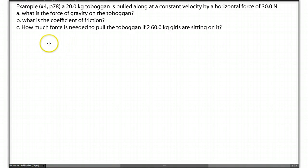Let's look at the example. The question is on page 78, number 4. A 20 kg toboggan is pulled along at a constant velocity—it should be velocity, it's speed on the original question—by a horizontal force of 30 newtons. The question is asking for part A, what is the force of gravity on the toboggan?